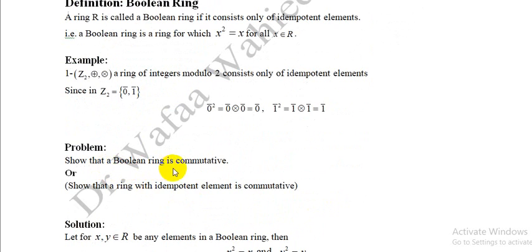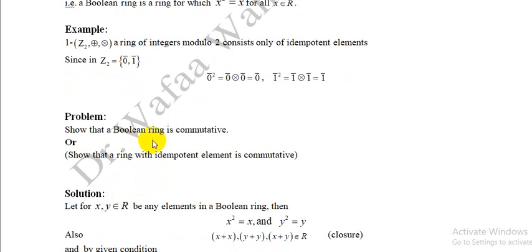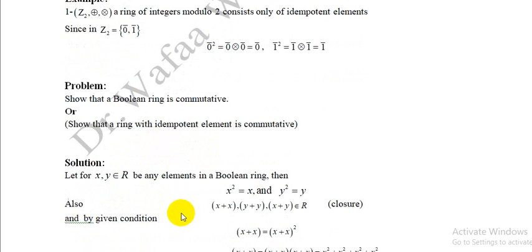Problem: Show that every boolean ring is commutative, i.e., show that a ring in which every element is idempotent is commutative. We want to prove that for all x, y in R, xy = yx. Let x and y be any elements in the boolean ring. Since every element is idempotent, x and y satisfy x² = x and y² = y.